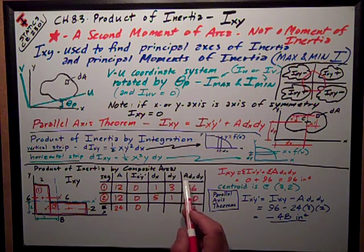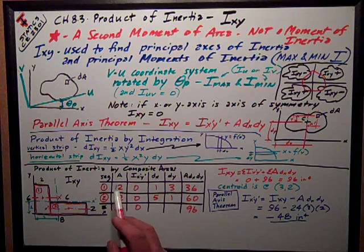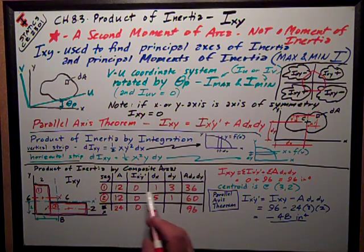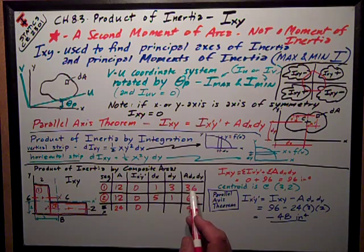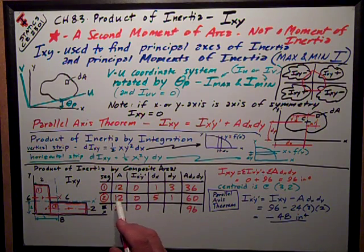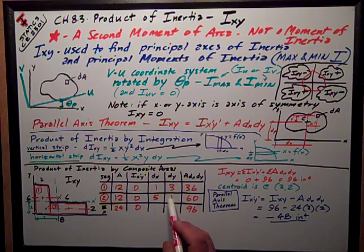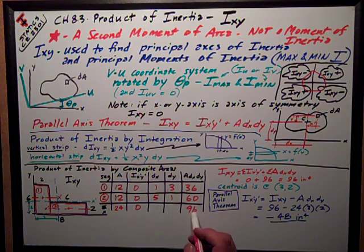I just then have another column, my final column is ADXDY, just multiply these things out, that 12 times 1 times 3 is 36 for segment one, 12 times 5 times 1 is 60 for segment two.